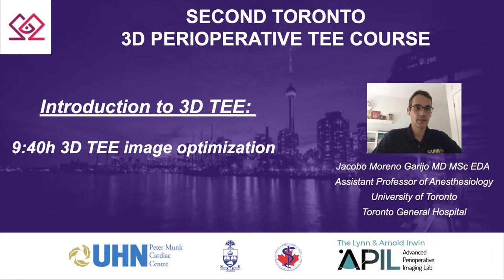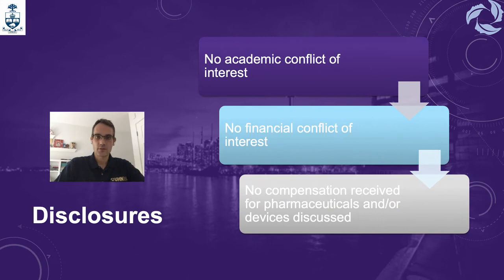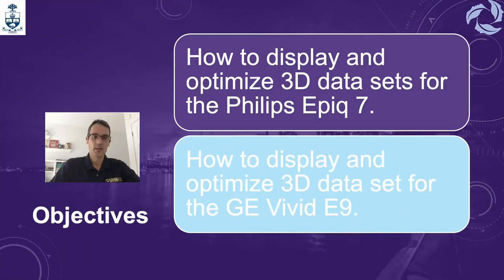Good morning everyone. In this video we are going to be talking about the 3D image optimization. I have enough disclosures to discuss with the audience. We are going to talk about how to display and how to optimize the 3D images, which is a dataset for the Philips Epic 7 and the GE Vivid E9.